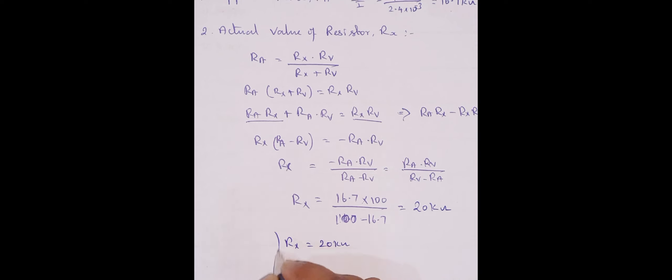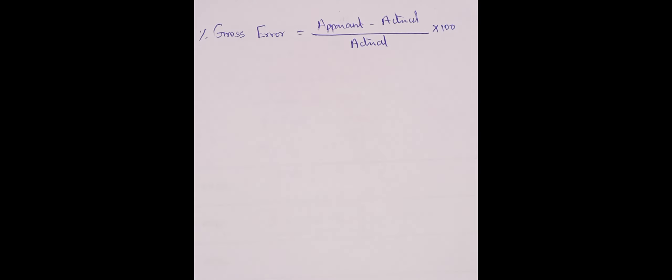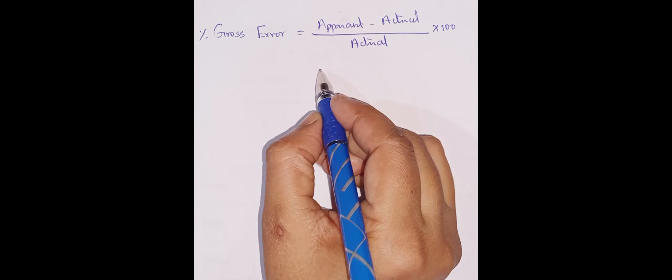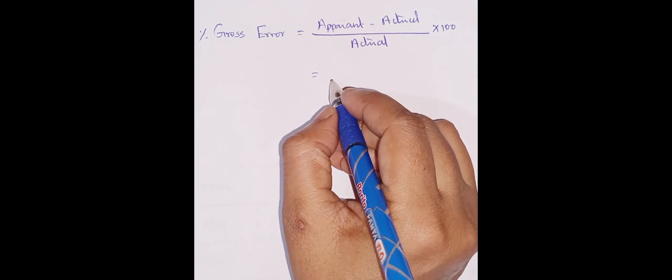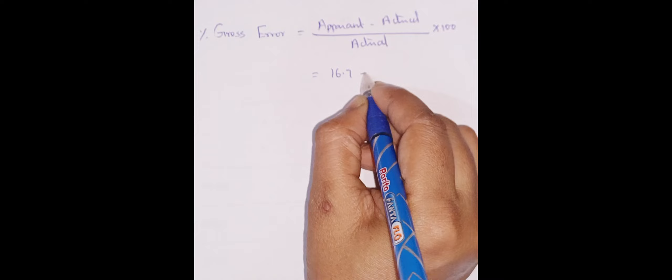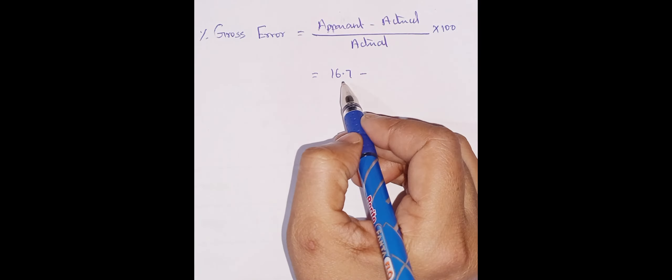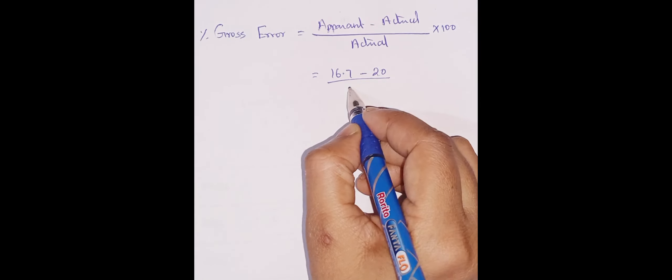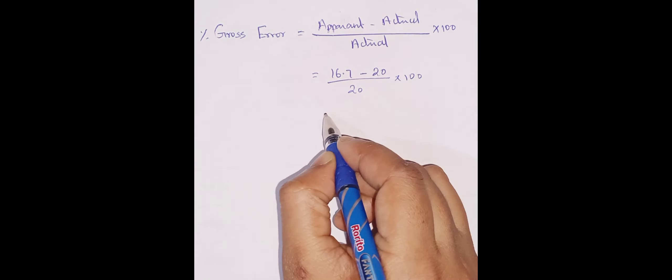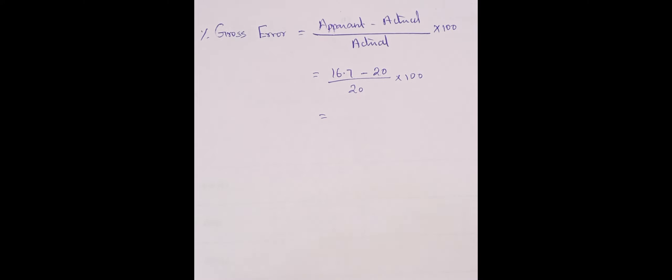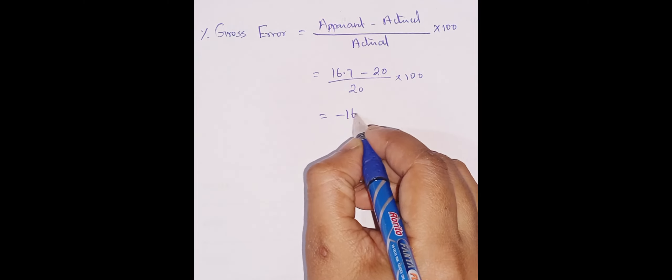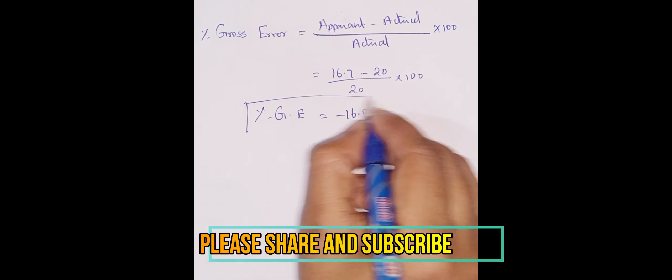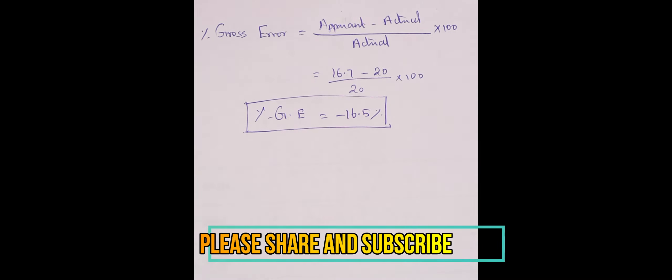So percentage of gross error is apparent value minus actual divided by actual into 100. Now the apparent value is 16.7, everything is in kilo-ohm so it is enough to write simply 16.7, actual is 20k divided by 20 into 100. So you will get minus 16.5 percentage. This is your percentage of gross error. Okay, thank you all for watching this.